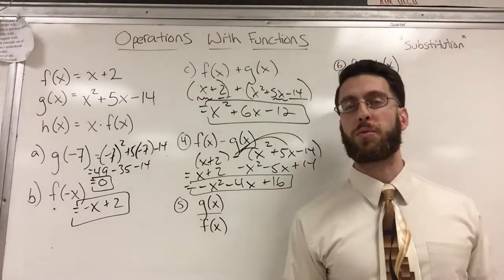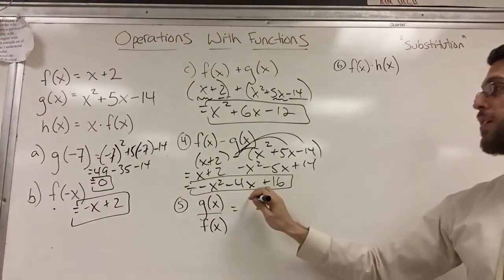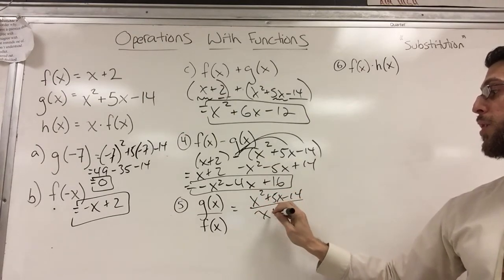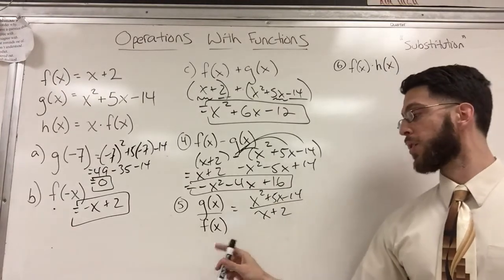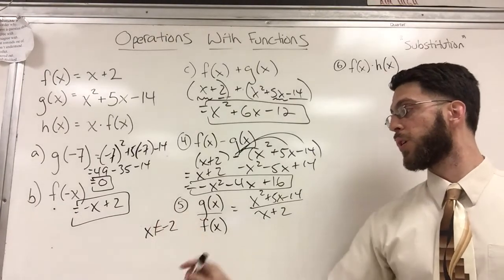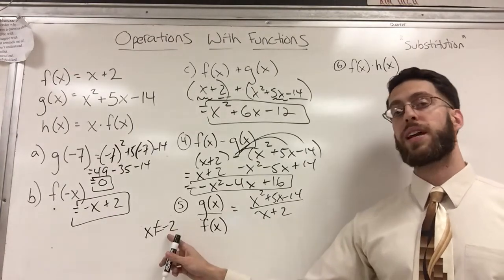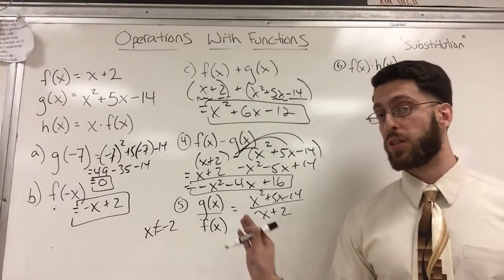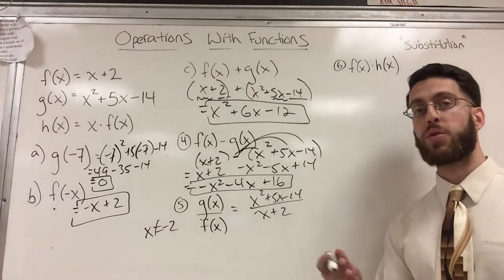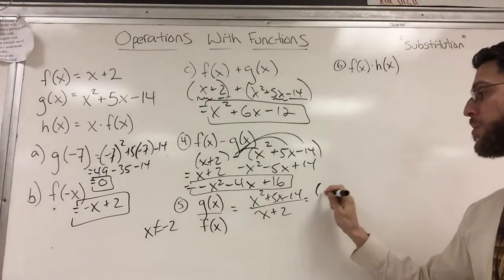Division. Finally, some real hard stuff. What's g of x? g of x is that, right? X squared plus five x minus 14 divided by f of x, which is x plus two. So there's gotta be a stipulation here that x cannot equal negative two. Stipulation x does not equal negative two because if it was negative two and I plugged it in, negative two plus two is zero and you can't divide by zero. So I'll always add a stipulation like that, but that doesn't change my division. I still have to divide.